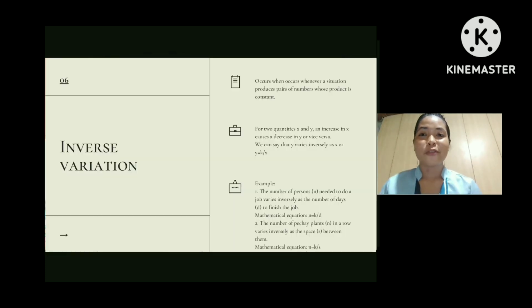So now we're going to define inverse variation and when inverse variation occurs. Inverse variation occurs whenever a situation produces pairs of numbers whose product is constant. For two quantities x and y, an increase in x causes a decrease in y or vice versa. We can say that y varies inversely as x or y equals k over x. So when we say inverse variation, it is opposite.